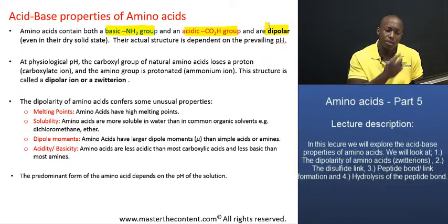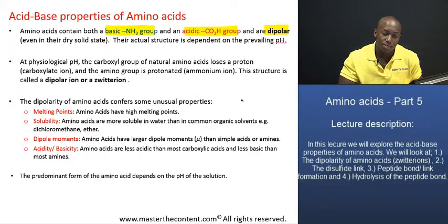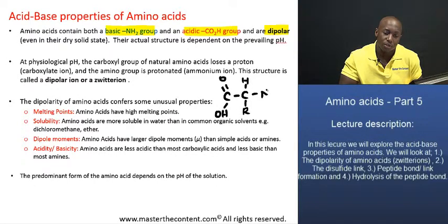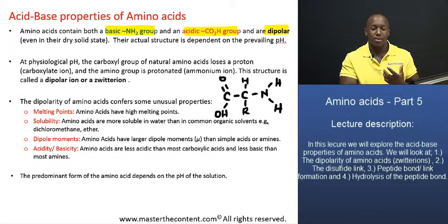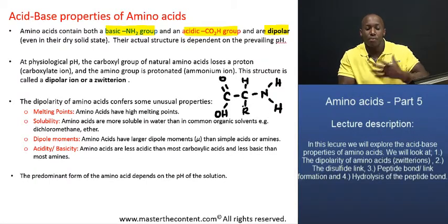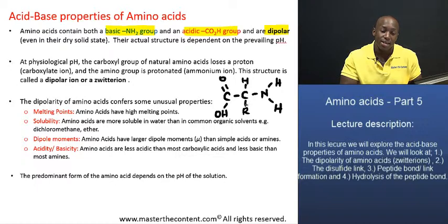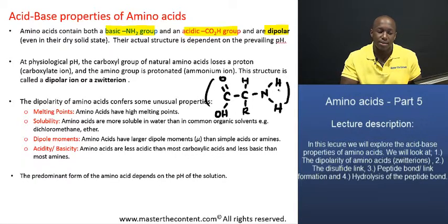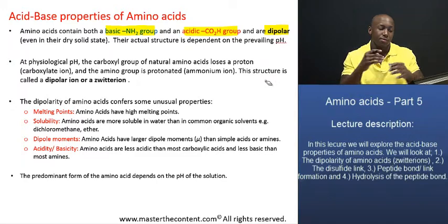Although we commonly write amino acids as having an intact carboxyl group and an intact amino group, this is actually not the structure in which we will find most amino acids. This structure is actually dependent on the prevailing pH of the environment in which the amino acid is contained, and it seldom actually exists in this neutral form with a neutral and complete intact carboxyl group and a neutral and complete intact amino group. So the actual structure is dependent on the pH of the prevailing environment.